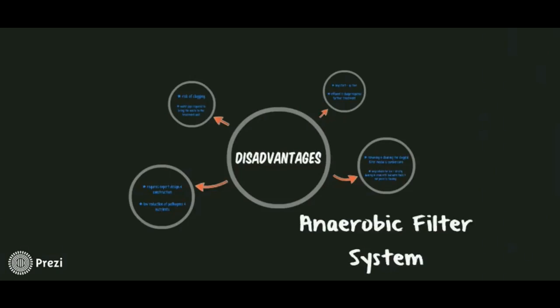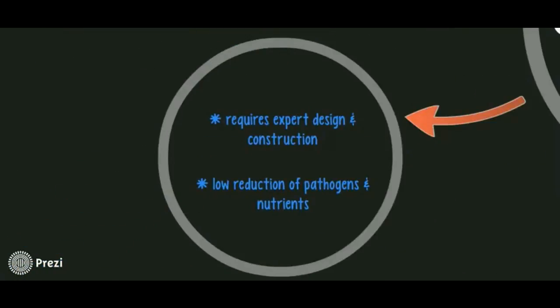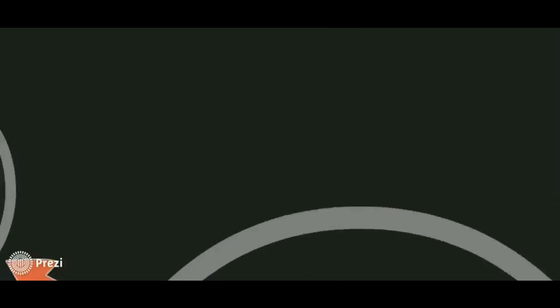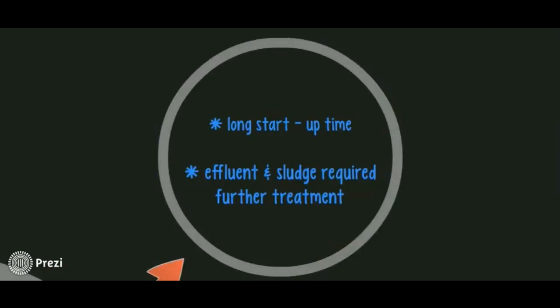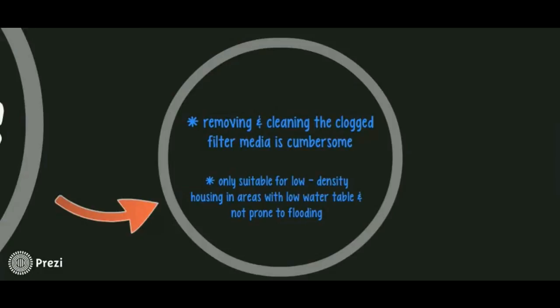Anaerobic filter system disadvantages: firstly, requires expert design and construction; low reduction of pathogens and nutrients; risk of clogging and water pipe required to bring the waste to the treatment unit; long startup time; effluent and sludge require further treatment; removing and cleaning the clogged filter media is cumbersome; and only suitable for low-density housing in areas with low water table and not prone to flooding.